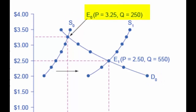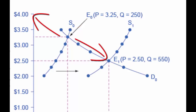The original equilibrium price is $3.25 and the original equilibrium quantity is 250. Next, we determine if the good weather is affecting supply or demand. In this case, the factor is shifting supply. Now that we know supply is being shifted, we need to determine in which way — in this case, the supply is being shifted to the right, meaning it is an increase in supply.